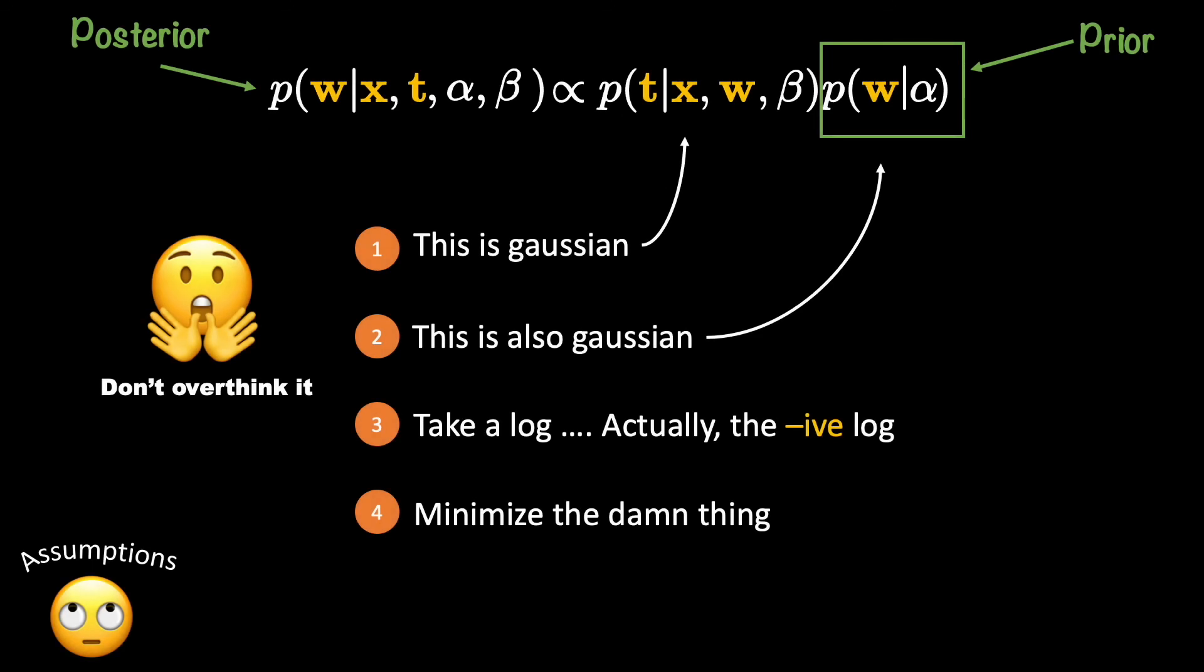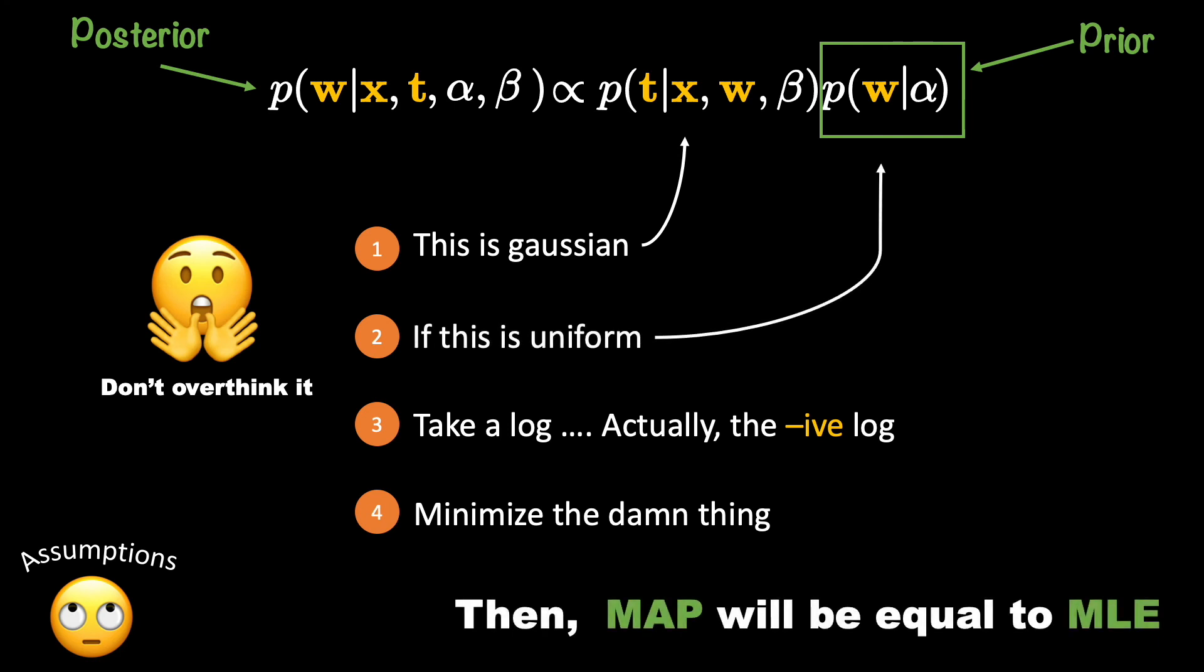We are almost done with this tutorial, but there is one more interesting thing that I want to show you. So far we have assumed that the likelihood and the prior are both Gaussian. However, if we were to assume that prior is uniform, then the MAP will be equal to maximum likelihood estimation. Uniform prior means that all values of W are equally likely, well within the interval range that you would use for your uniform distribution.